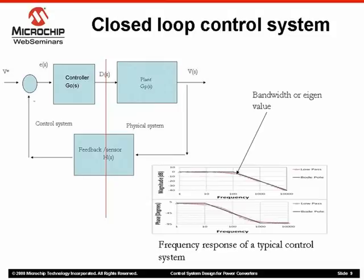This is the frequency response of a typical control system. As you can see, it is quite similar to a low-pass filter. The cutoff frequency, or the point at which the slope changes on the magnitude plot, is known as the bandwidth. What it essentially says is that if you have an input varying up to, say, 100 Hz pertaining to this plot, the system will be able to follow it. Above 100 Hz, the system output will be greatly attenuated and will not follow your input reference.